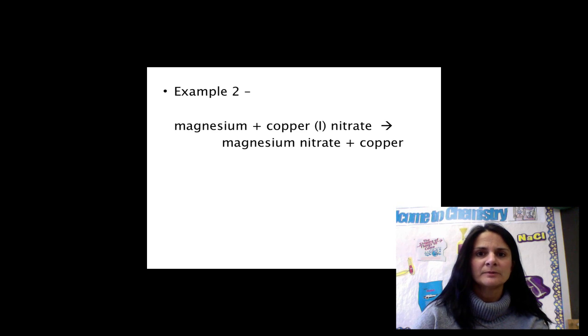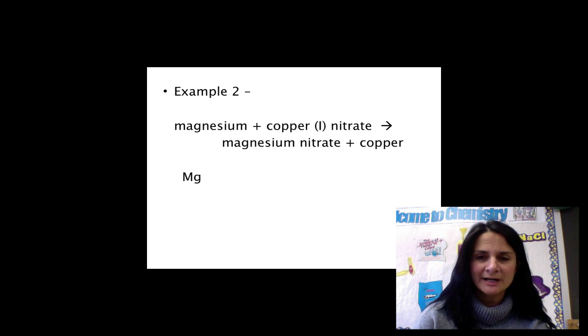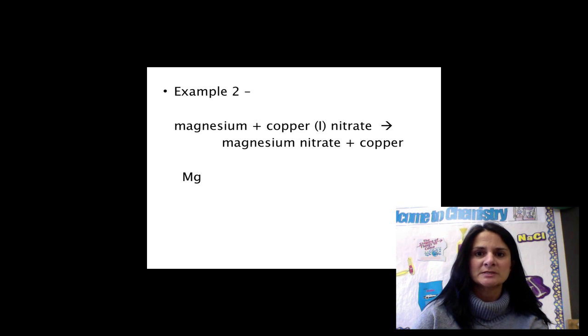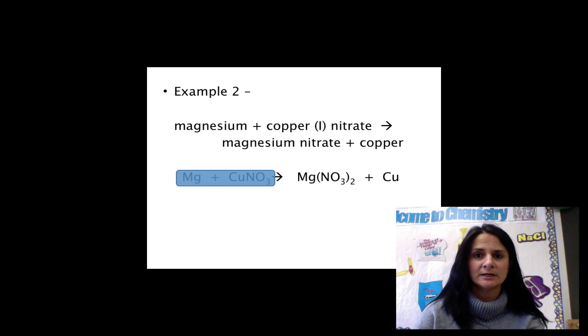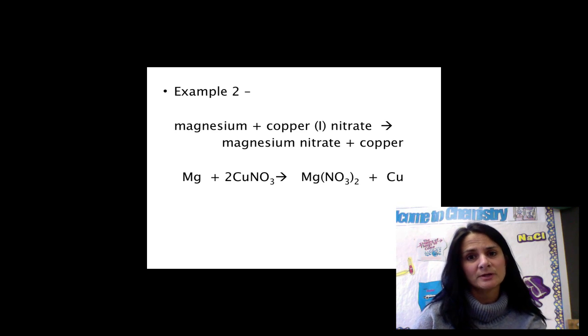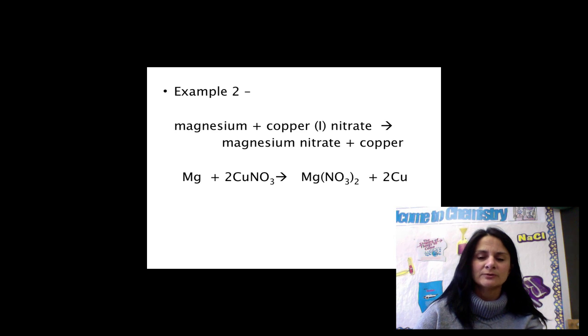When we go to write the equation for this reaction, magnesium in its elemental form does not have an ion charge, so we would simply write Mg. Copper 1 nitrate is written CuNO3. Again, let's cover up the reactants as we proceed to write the products. Magnesium nitrate and copper. Again, copper is in its elemental form, so it has no ion charge on the right-hand side. Let's uncover and balance. To balance this reaction, we would need a 2 in front of the copper nitrate and a 2 in front of the copper.